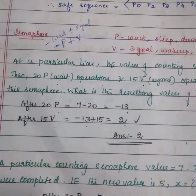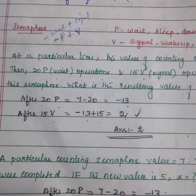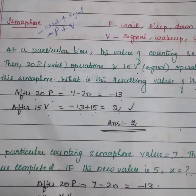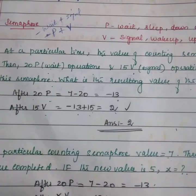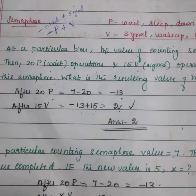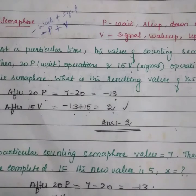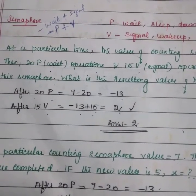Semaphore is a synchronization tool. It is an integer variable that is used to solve critical section problems by using wait and signal operations. It is used to control access to a shared device between tasks. It is of two types: binary semaphore and counting semaphore.